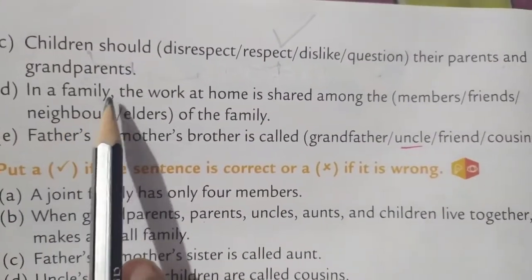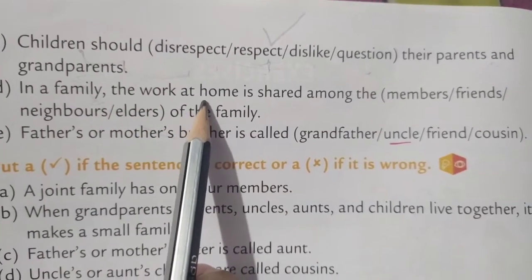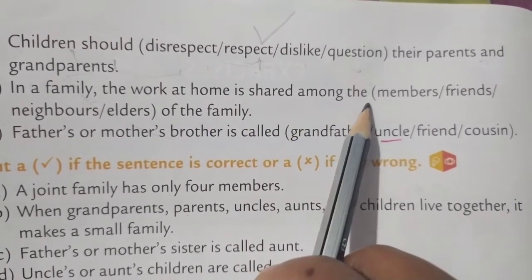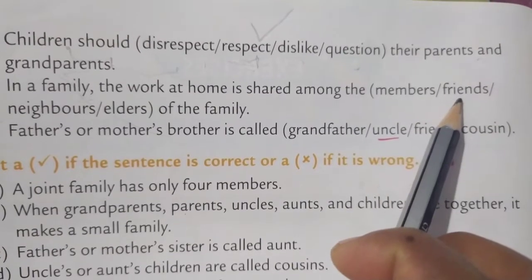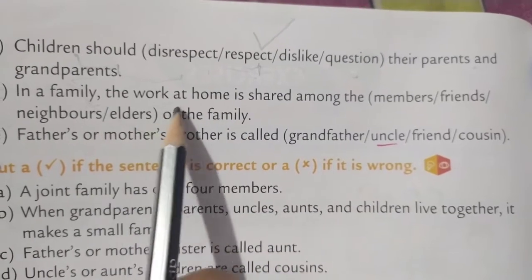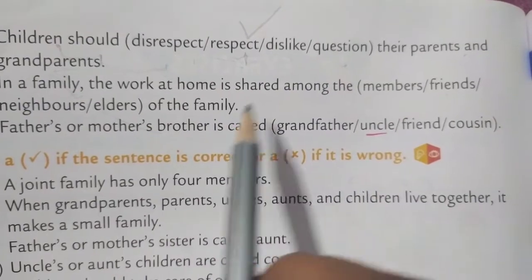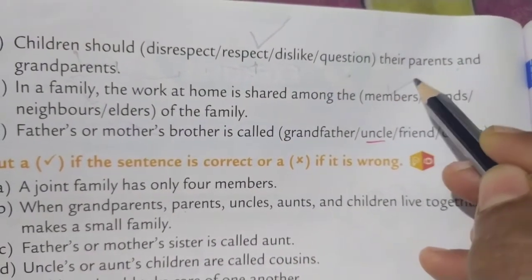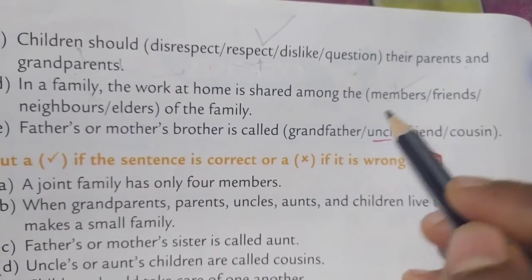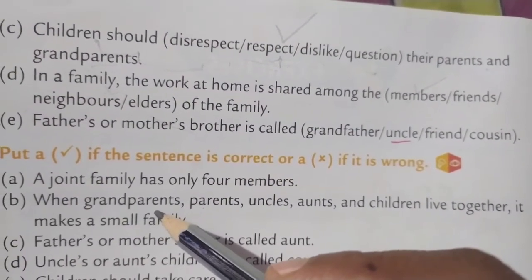Then D: 'In a family, the work at home is shared among the dash.' Options: friends, neighbors, elders of the family, members of the family. In a family, the work at home is shared among the members of the family. Spelling: M-E-M-B-E-R-S. The work at home is shared among the members.